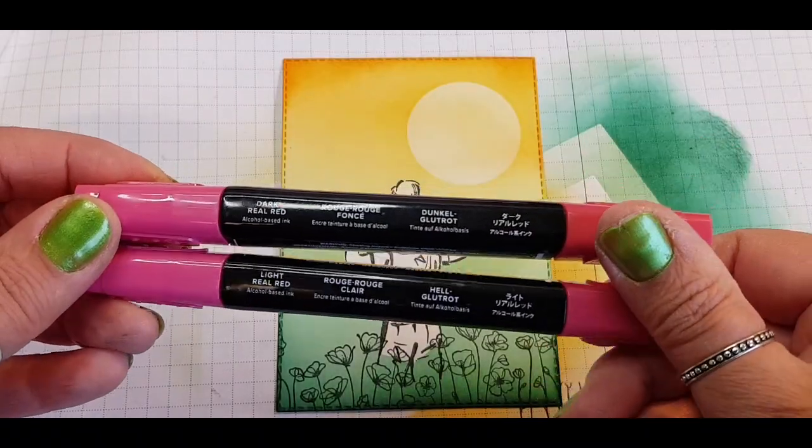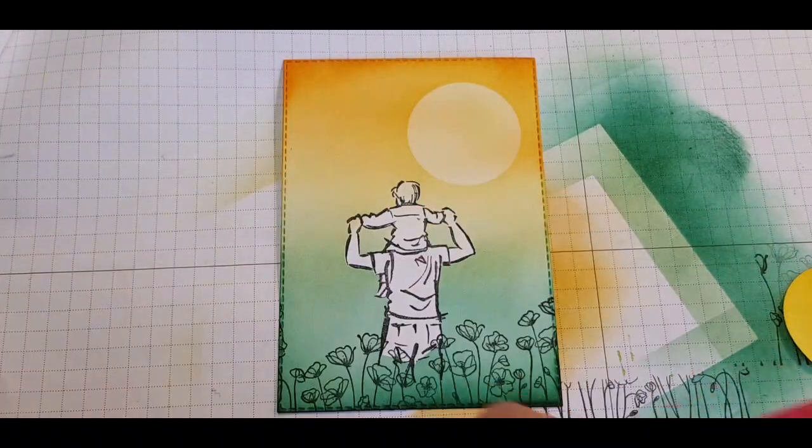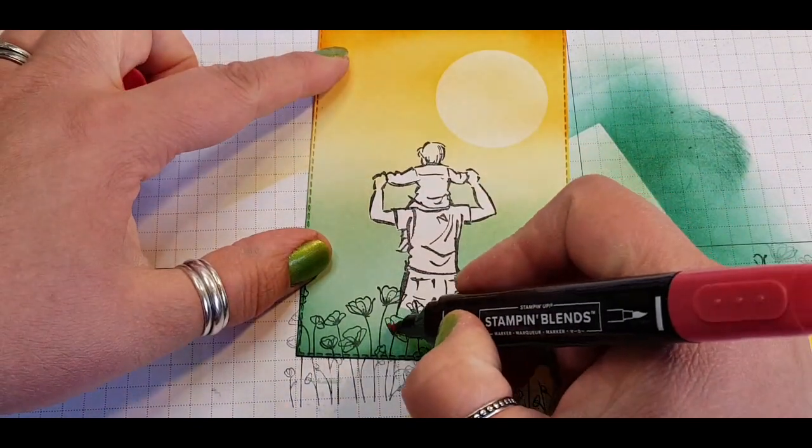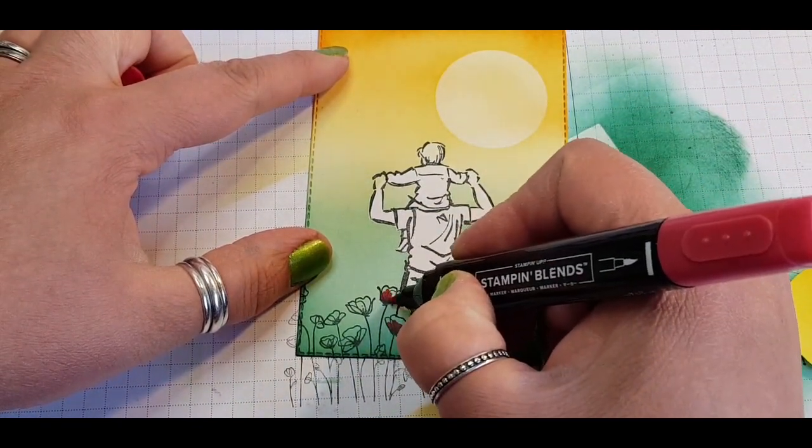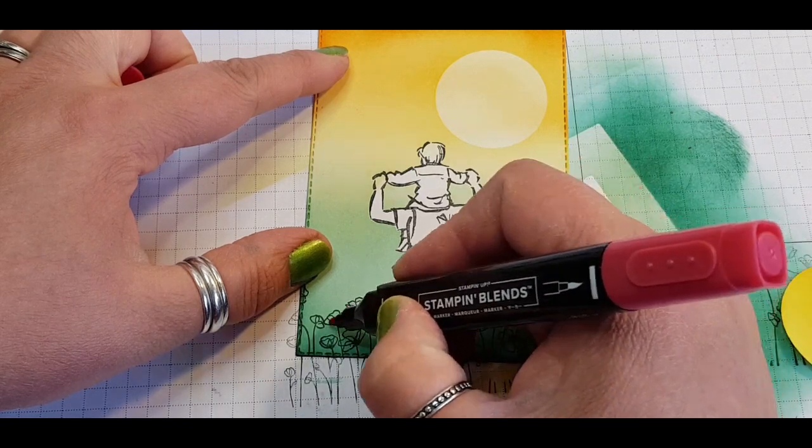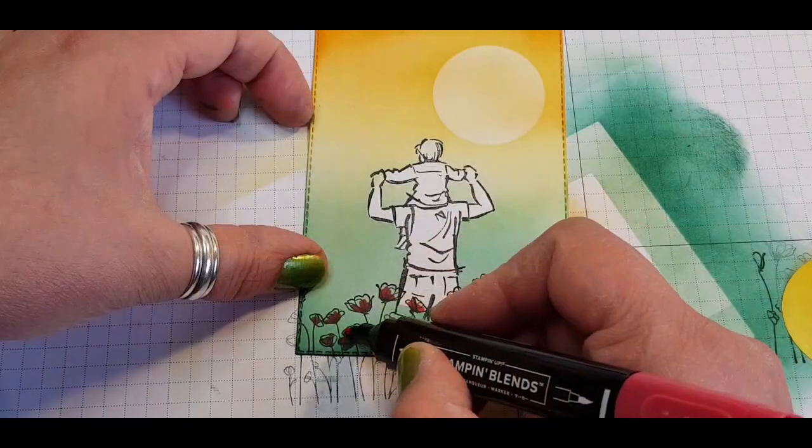So we've lifted off the mask and I'm now going to go in and color in the poppies using the Stampin' Blends. Going in with a darker color first and then coming back with a lighter to fill in those poppies.